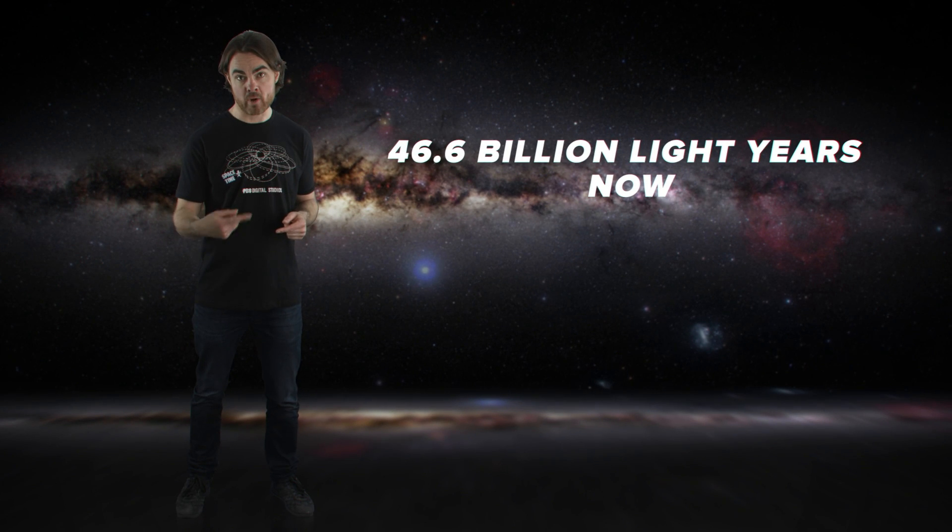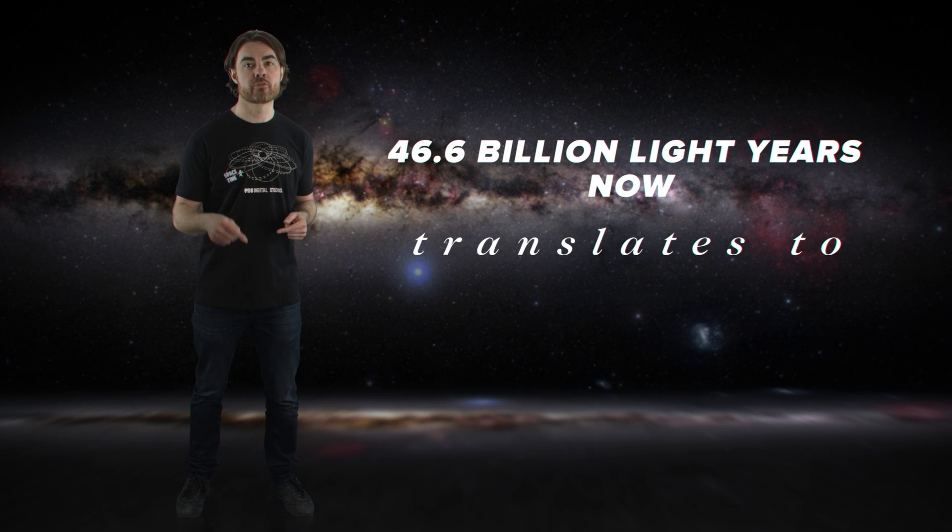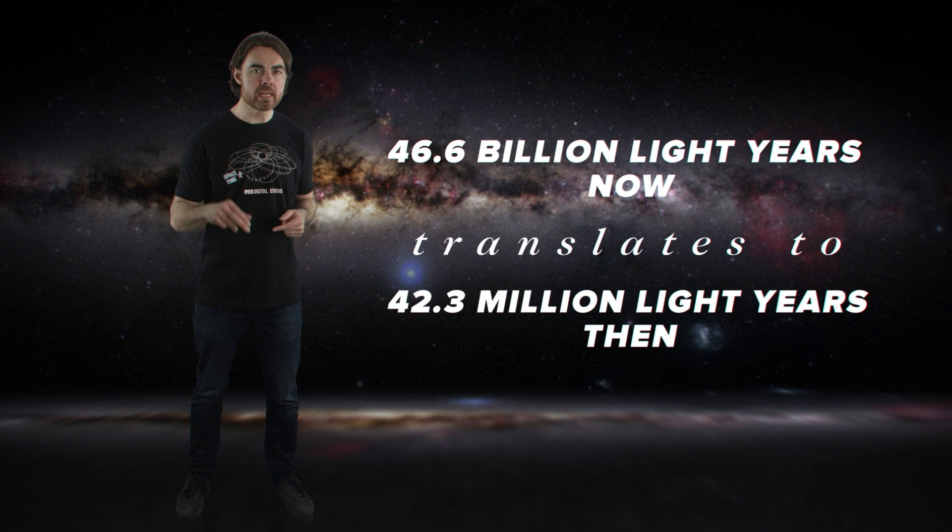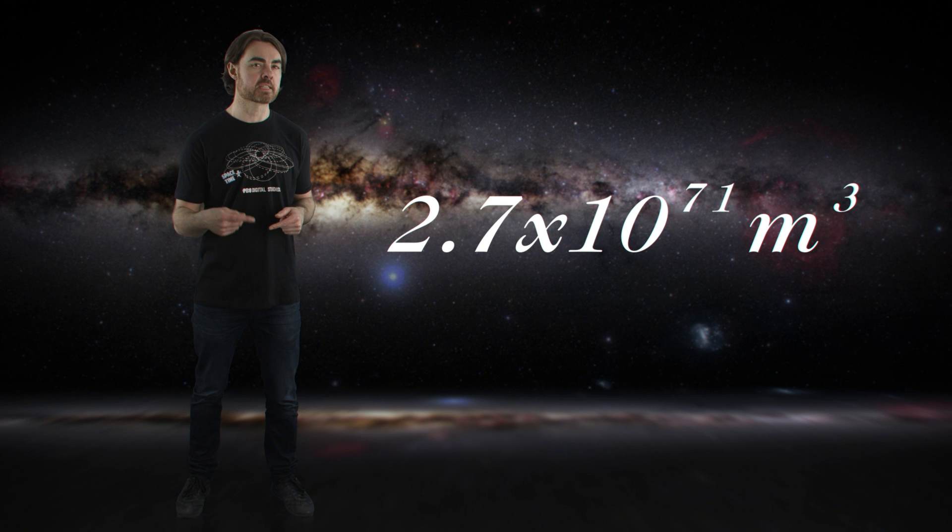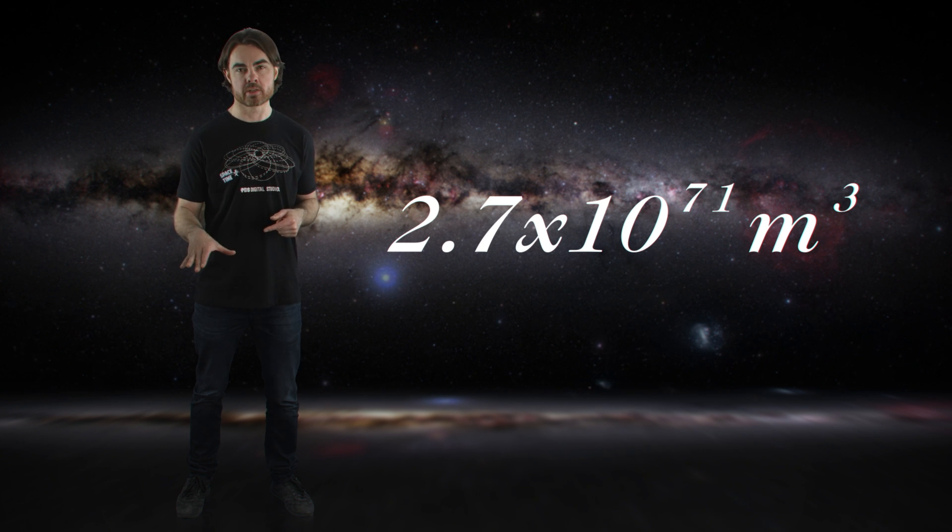All of those electrons existed at the moment of recombination, so let's get the electron density back then. The redshift of the CMB is 1089, so that's also how much smaller the universe was back then. 46.6 billion light years in radius now